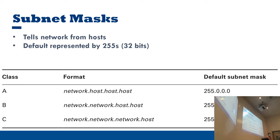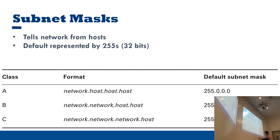The default subnet mask is in a format where 255 describes the network portion and 0 describes the host machines. For example, in a class A network starting with 10.something, the other three octets can all be used to distinguish hosts. For class C, only the last octet can distinguish hosts. Just understand that 255 refers to the network and 0 refers to the host in a default mask.